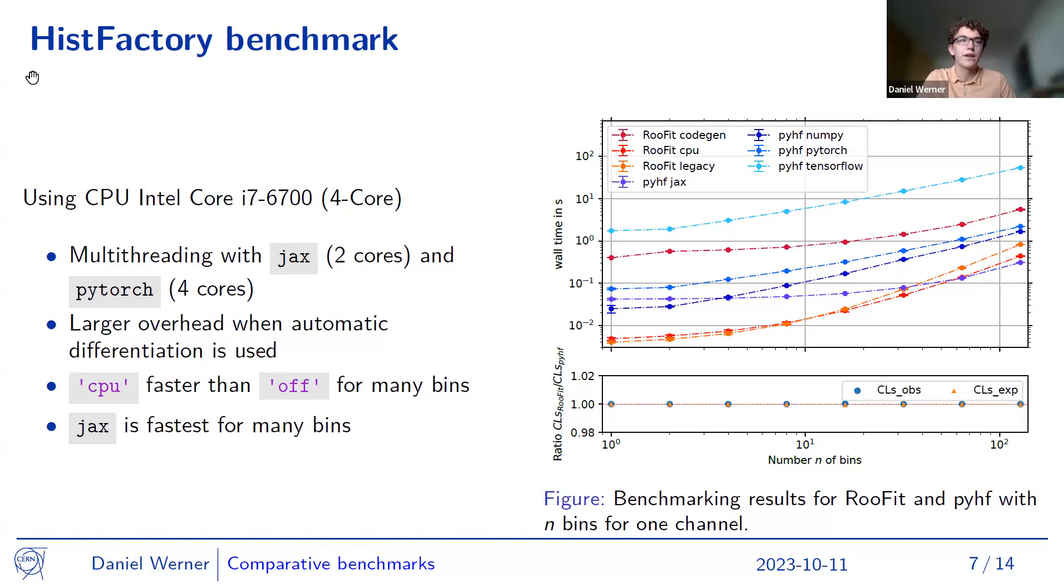But in the end, we see that actually JAX overtakes, so JAX becomes faster. And for many bins, so about 100 bins, JAX is the fastest tested evaluation backend, which shows us that at that point, the overhead is no longer dominant, but the automatic differentiation, for example, really pays off and improves our performance. And in general, the largest overhead is in TensorFlow and codegen. And we see a small change between the RooFit backends of CPU and legacy, because in the beginning for very few bins, we see that RooFit is fastest when not even using the vectorization of the CPU backend. But then for more bins, we get more parameters in our fit and then at some point, the CPU backend and the vectorization pays off.